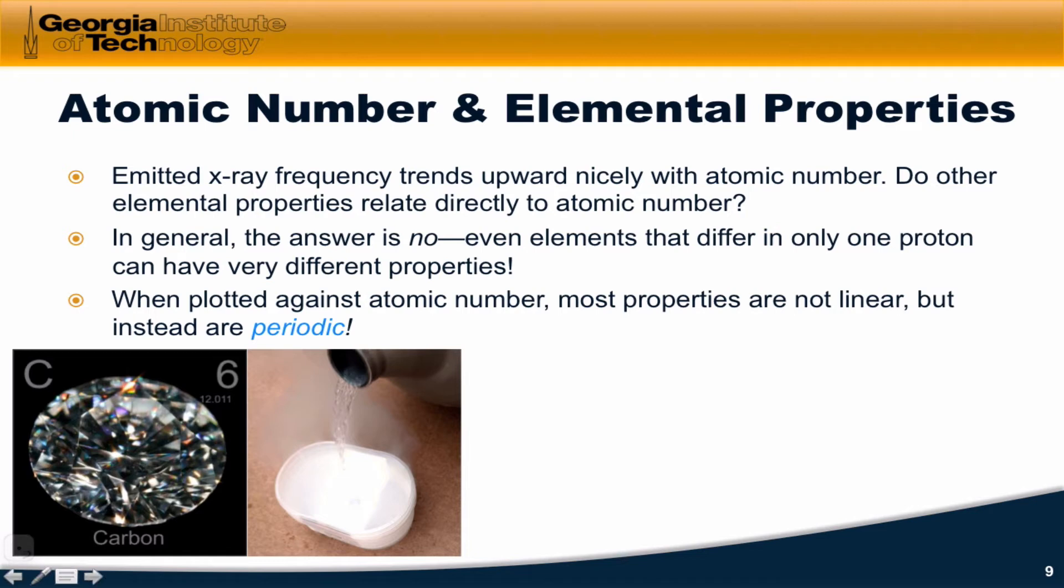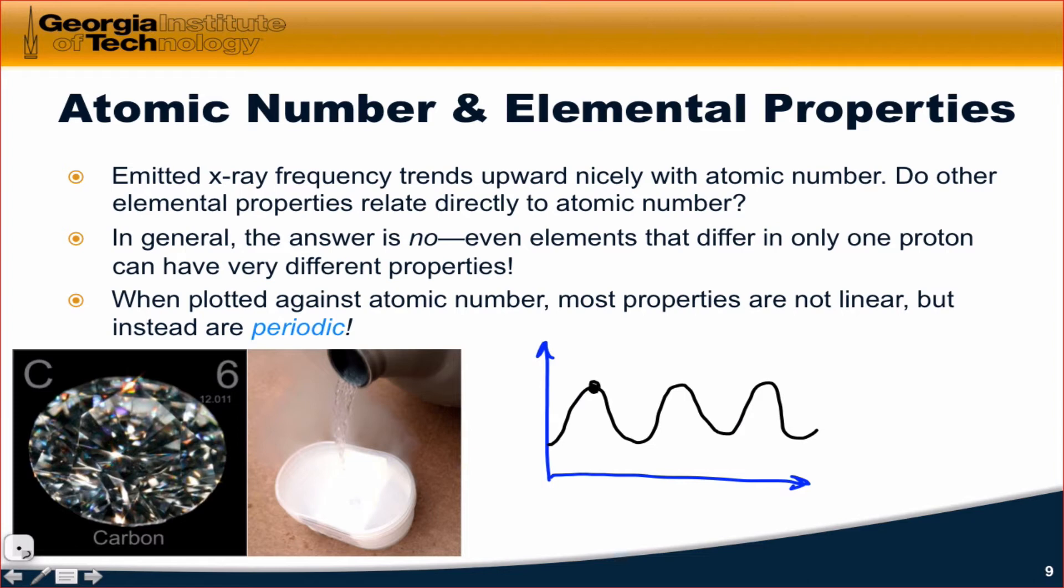So remember what a periodic function is. A periodic function is one that repeats over and over again. Just to show the idea in general here on a generic set of axes, a periodic function is something like the sine function, which goes up and down and up and down, over and over again. We can identify certain things about periodic functions. For example, the time it takes to get back to where we started, which is known as the period of the function. We can notice in a periodic function that there are corresponding points one period away in that same position.